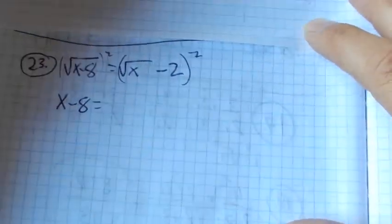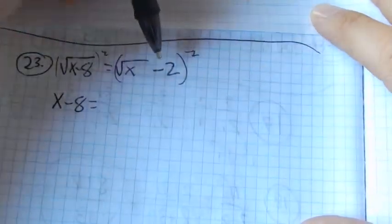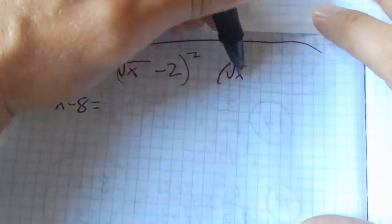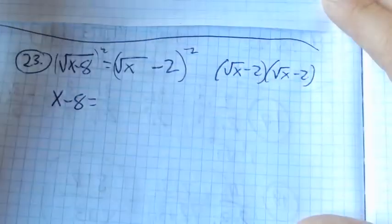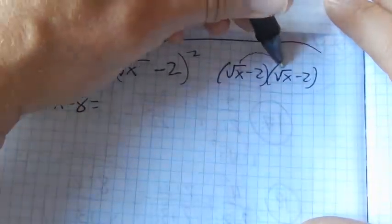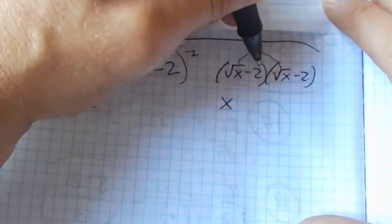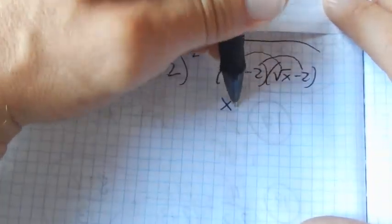On the right-hand side though, I'm squaring this whole thing. It's times itself, this is the same as this. So let me multiply this out. Root x times root x is x.